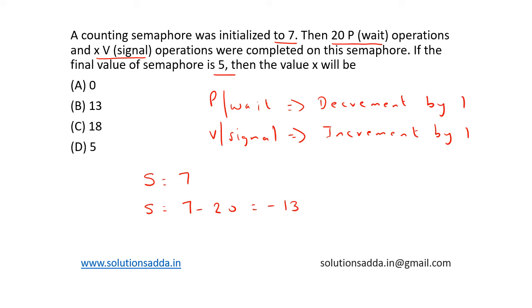Now with x V operations, we have the final semaphore value is 5, so minus 13 plus x equals 5. We can say that x equals 13 plus 5, which equals 18.